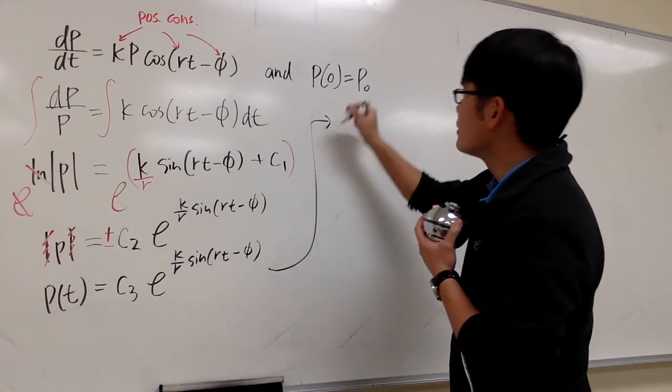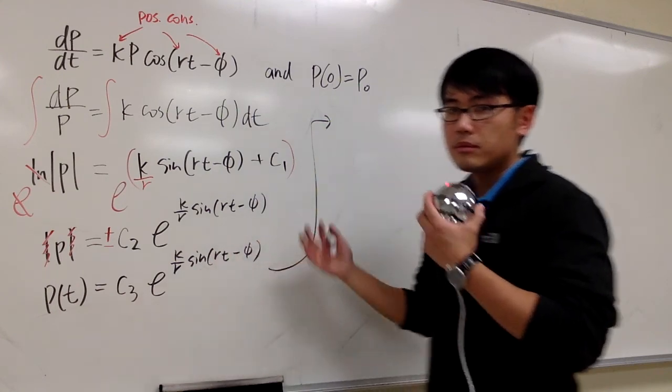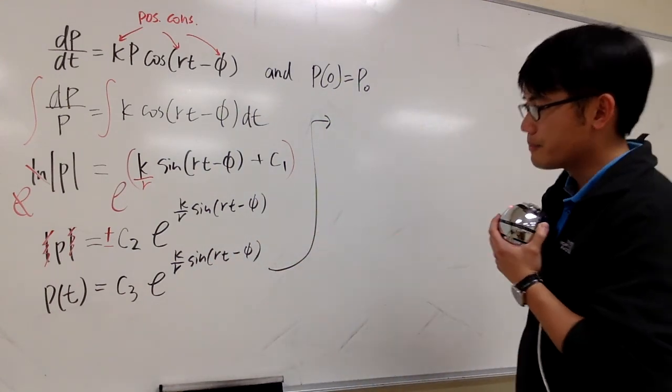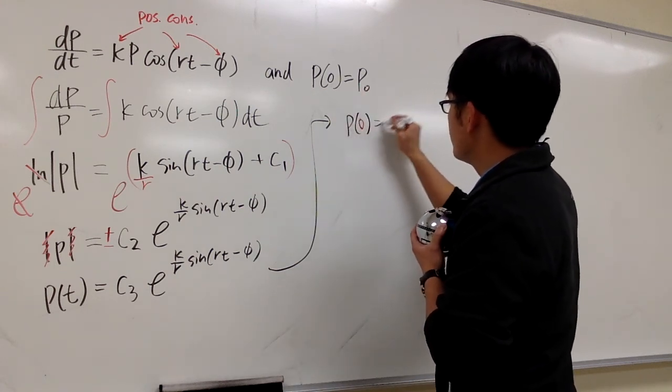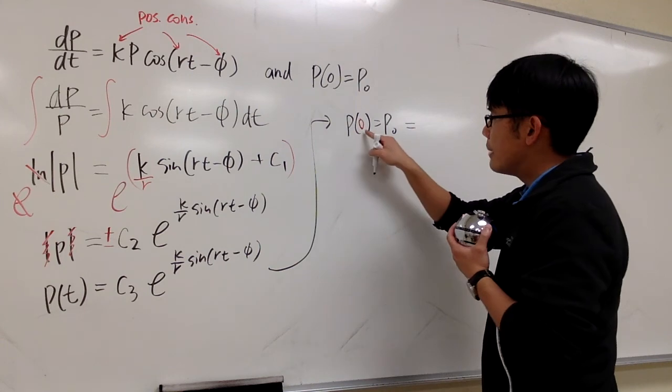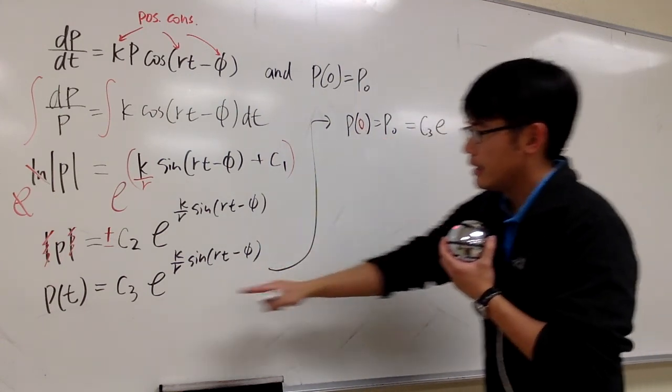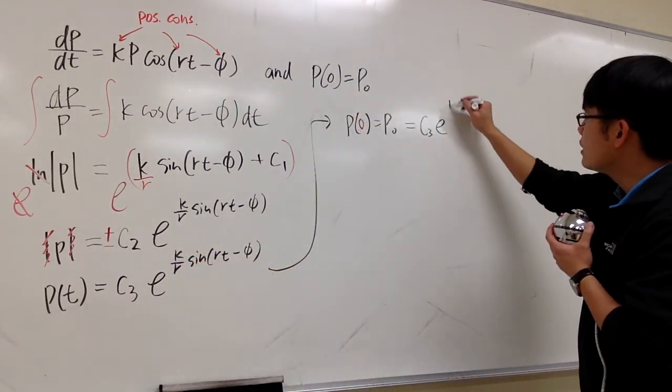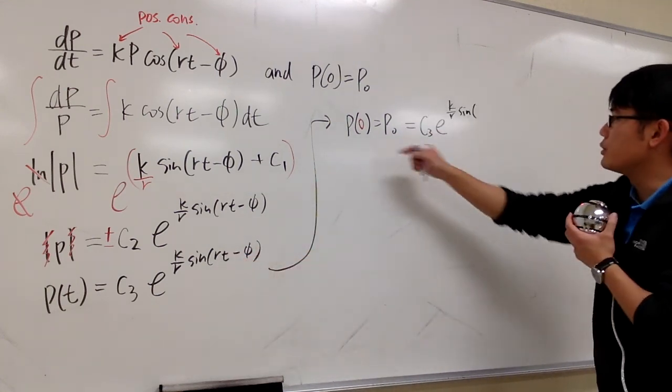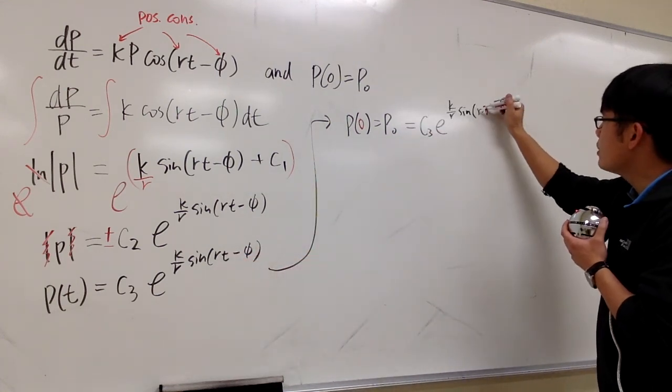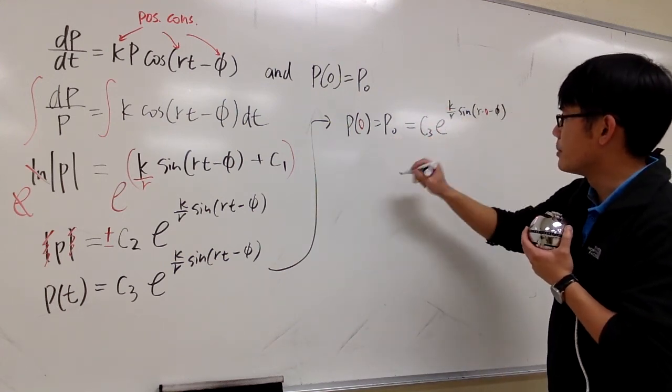And now, we have to figure out plugging 0 into t and plugging p0 into p and solve for the initial value. And we have what? p(0) is equal to p0. That means I have to plug in 0 into this t right here. I will have c3 e to the k over r, sine of r times t. But t is equal to 0. So we have r times 0, and then minus v, like this.